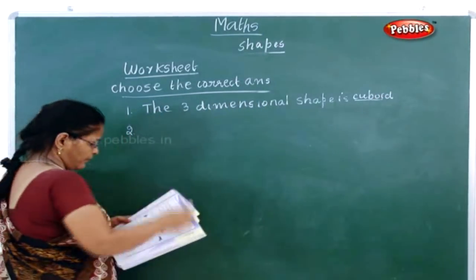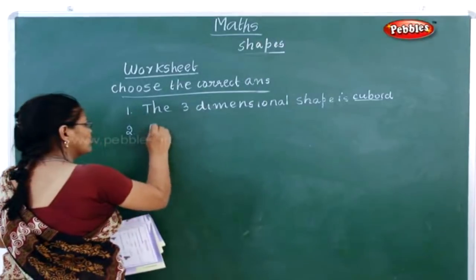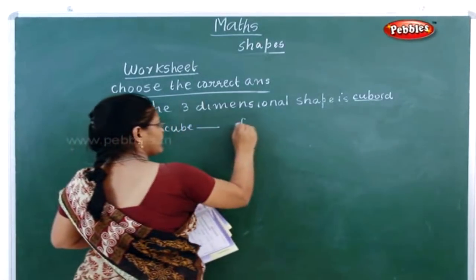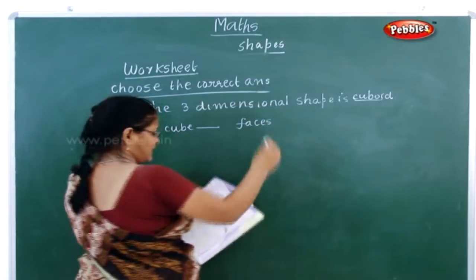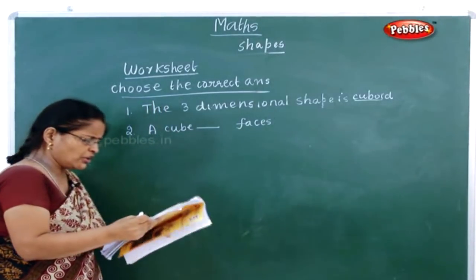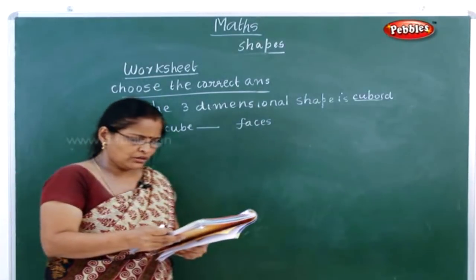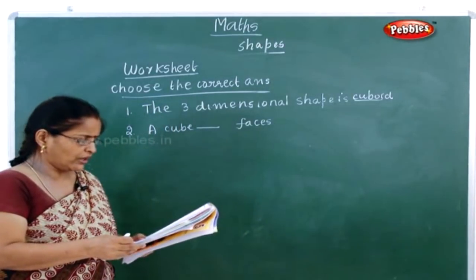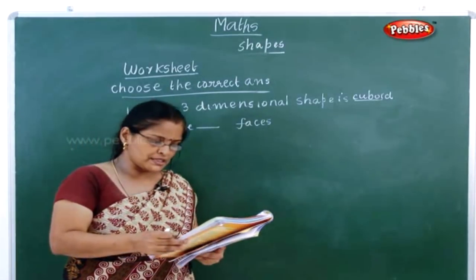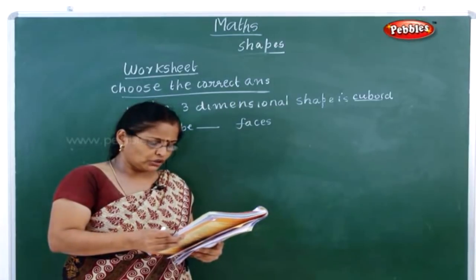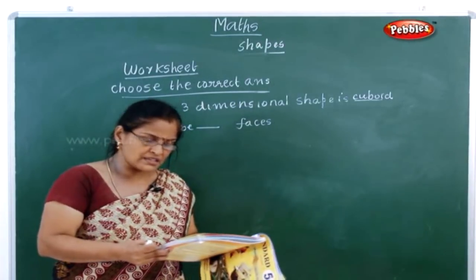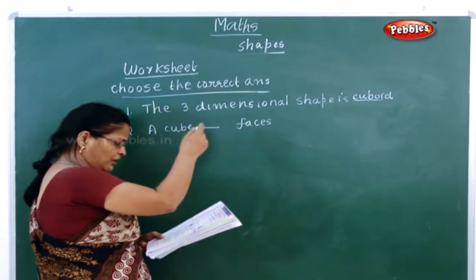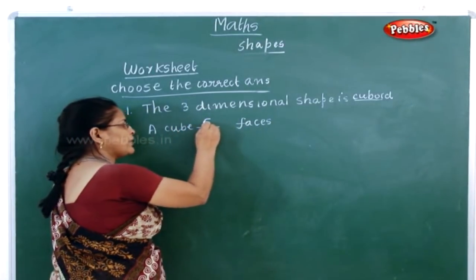The second question: a cube has dash faces. The options are 4, 6, 8 and 10. How many faces does a cube have? A cube has 6 faces.